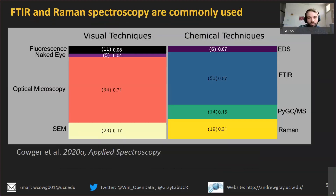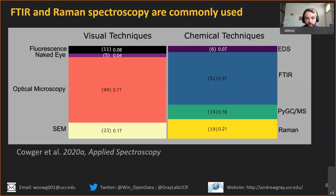That's really where spectroscopy comes in. We did a review of all the techniques being used right now to classify plastics in environmental samples. There are several different visual techniques, with optical microscopy being one of the most used. There are also chemical techniques used to validate the optical microscopy observations, and the two most common for chemical validation are FTIR and Raman. We think these techniques are really important for advancing microplastic methods.